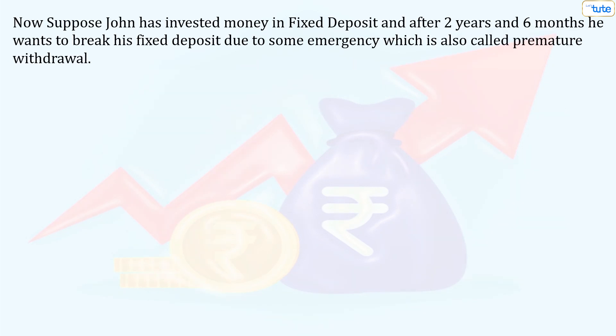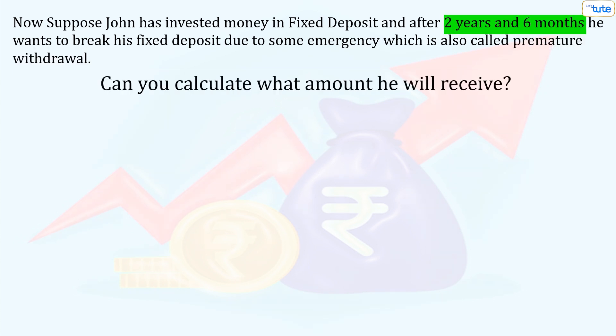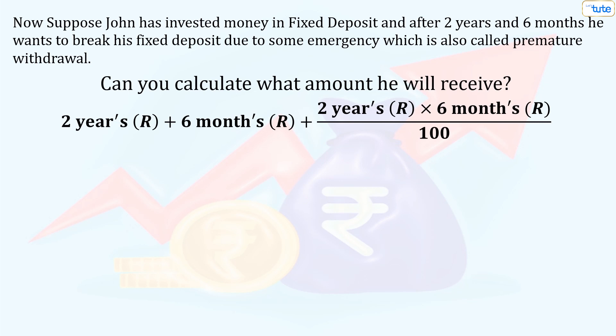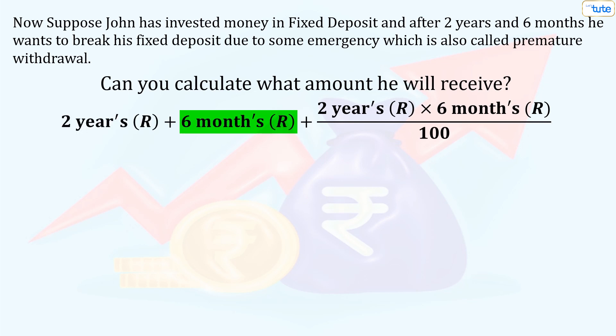Now suppose John has invested his money in a fixed deposit, and after 2 years and 6 months he wants to break his FD due to some emergency, which is also called premature withdrawal. Can you calculate what amount he will receive? We can solve it using the same trick we just learned — easily finding the interest amount after 2 years, and then finding how much he will get for the remaining 6 months.